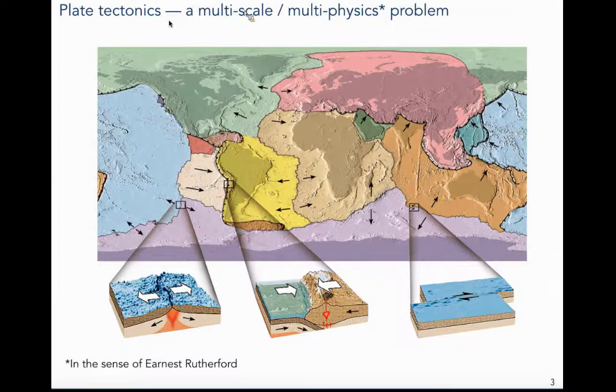I say multi-physics, that's in the sense of Ernest Rutherford's physics of stamp collecting. So there's physics, chemistry, everything is implied here, but there's multiple systems interacting, and sometimes those scales are so crazily different that they look like different physics or chemistry altogether.